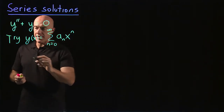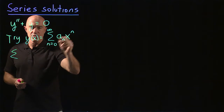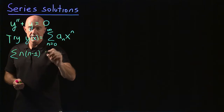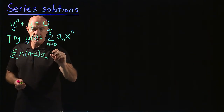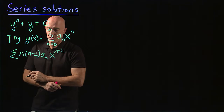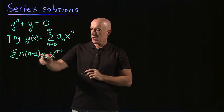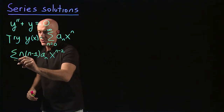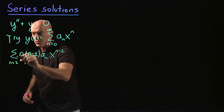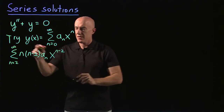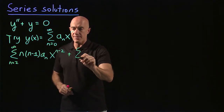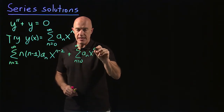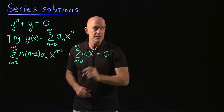So if you substitute in, you get the summation and taking the second derivative, you get n times n minus 1 times a sub n times x to the n minus 2. The n equals 0 and n equals 1 terms are zero here, so we can take from n equals 2 to infinity, plus y, which will be the sum from n equals 0 to infinity of a sub n times x to the n, and that's supposed to be equal to zero.